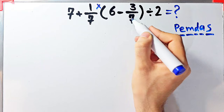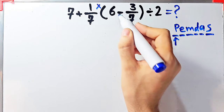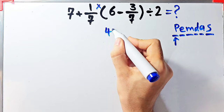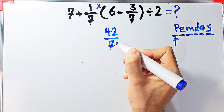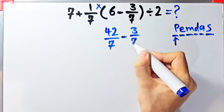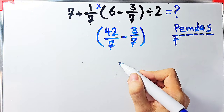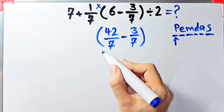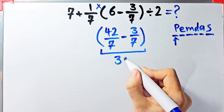Since the denominator of this fraction is seven, we can write six as forty-two over seven. Now we have forty-two over seven minus three over seven. Forty-two over seven minus three over seven equals thirty-nine over seven. So inside these parentheses we have thirty-nine over seven.